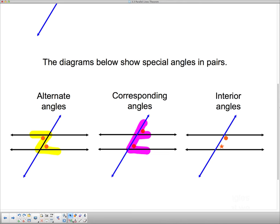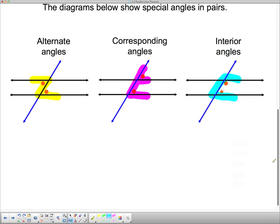And lastly, interior angles. Interior angles form a C pattern. And notice I didn't mark them with the same symbol. That's because interior angles aren't equal. Here's how, here's what we know about these angles in here.